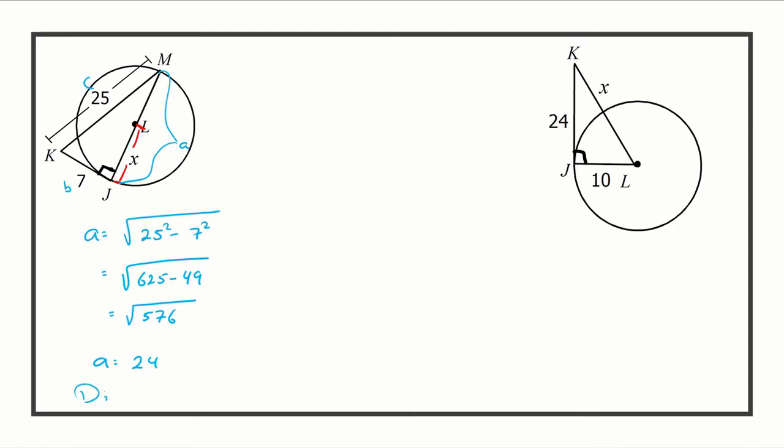Remember that 24 represents the diameter. We want the radius because that's what represents x, so x is 12. Looking at the second problem, x represents the distance from the outside of the circle.